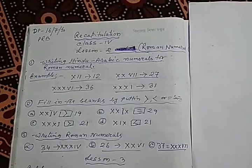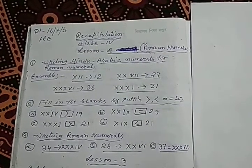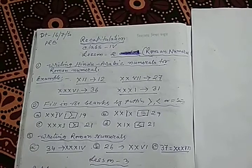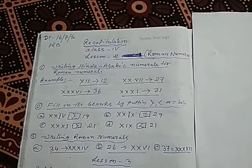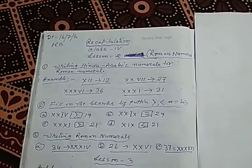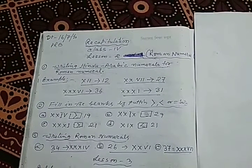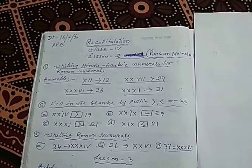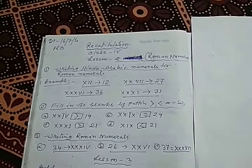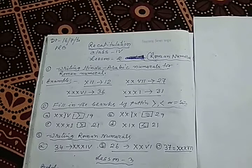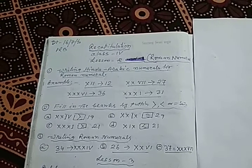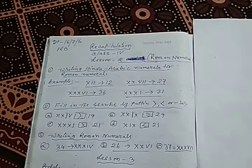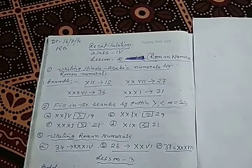Last Monday, we recapped lesson number 1, which was about numbers and number names. Today, we will recap the second lesson, which is about Roman numbers. I discussed everything in this chapter before the summer vacation. Today we will just recap it for our convenience. You need not write anything in your classwork copy because all these sums were done before the summer vacation.